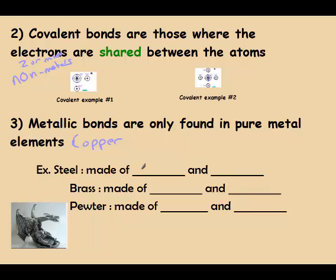For example, steel is made out of iron and carbon, while brass is made of copper and zinc. And pewter — you may not recognize the name, but that's what you find in gift stores a lot of times: that silvery material they make little figurines out of.